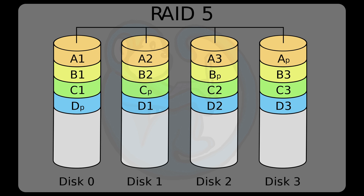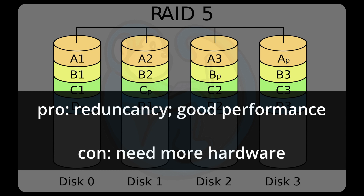RAID 5 basically boasts block-level striping with distributed parity. The data is striped across each of the drives, and then there's also parity information stored on other drives. You need three or more drives to create a RAID 5 array. If any drive fails, there is still enough data on the other two drives to recreate that dead drive. The advantage is redundancy and good read-write performance. The negative is you need more hardware — with three one-terabyte drives, you basically only have two terabytes of usable storage.